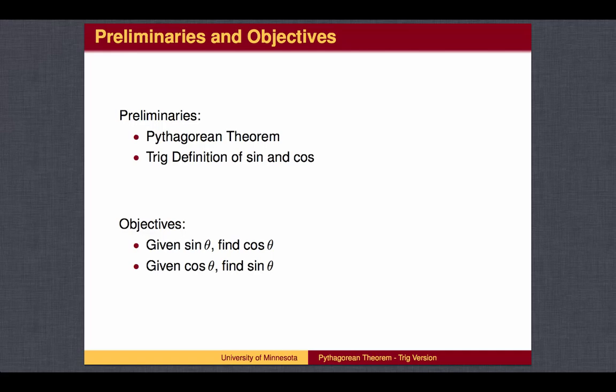You should be familiar with the geometric version of the Pythagorean Theorem and the Trig definition of sine and cosine. That is, sine and cosine are defined as the coordinates of points on a circle of radius 1, called the unit circle.